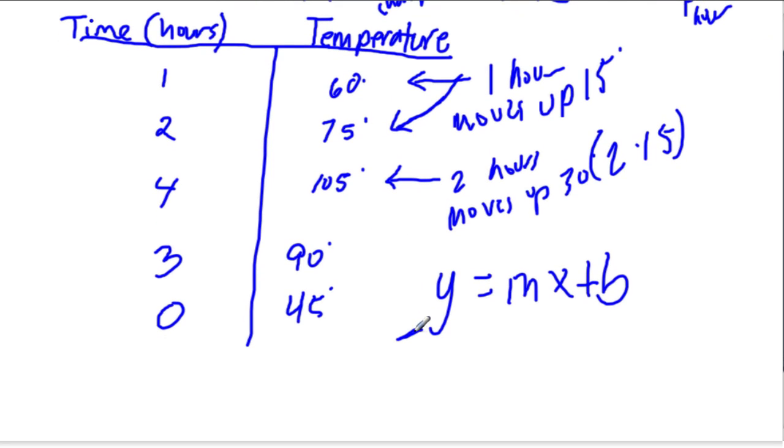y, that is the dependent variable or the temperature. x is the independent variable. Remember, that's the amount of time that passed. Time is typically independent. m is our rate. We found already that this temperature is jumping up 15 degrees for each single hour. So m will be 15.